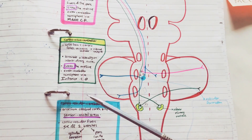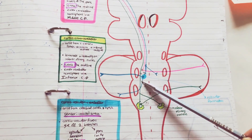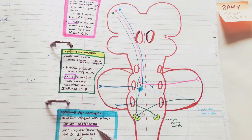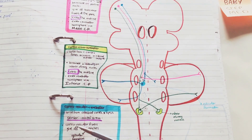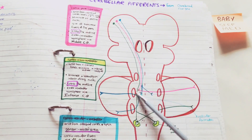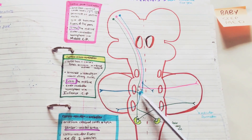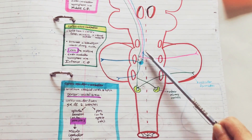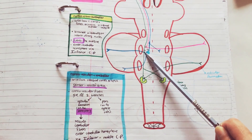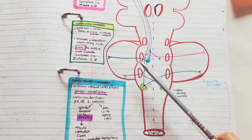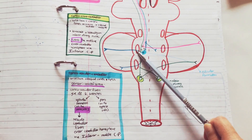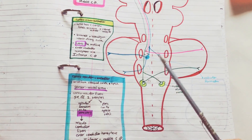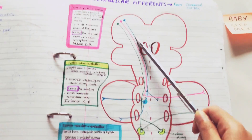Then we have the corticoreticular cerebellar afferents, which arise from the cerebral cortex, especially in the sensorimotor areas. They give off two branches. The first branch goes to the reticular formation on the same side, which gives off reticulocerebellar fibers entering the cerebellum via the inferior and middle cerebellar peduncle. The second branch crosses the midline and enters the pons on the opposite side.